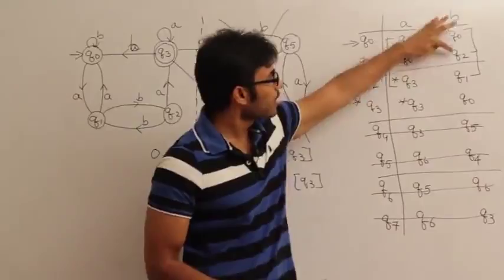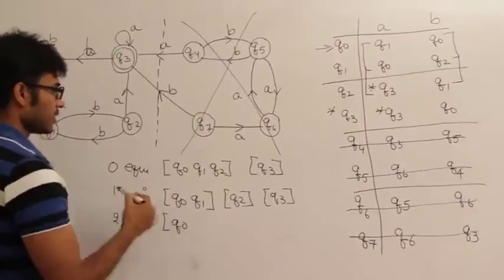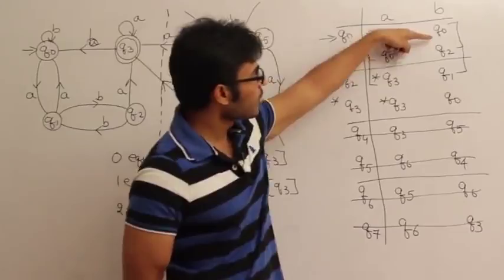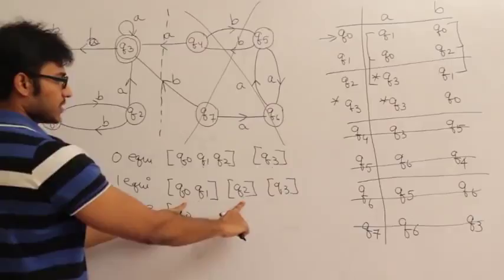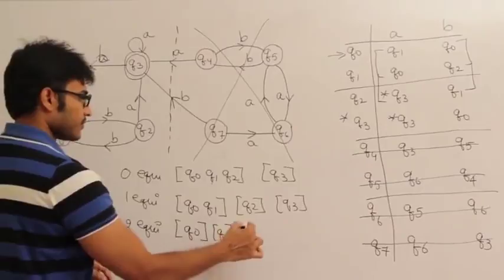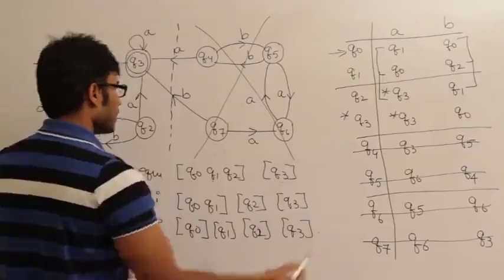Q0 and Q1 on small b are going to Q0 and Q2. Q0 and Q2, which means Q0 and Q1 on small b are going to different groups in the previous equivalence. Therefore, they are no more equivalent.